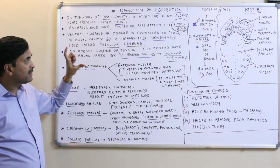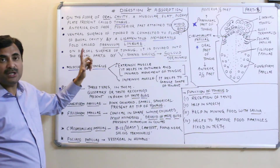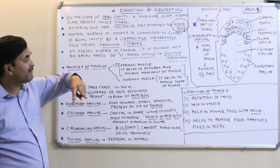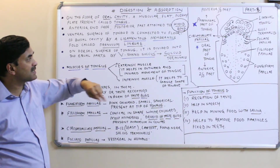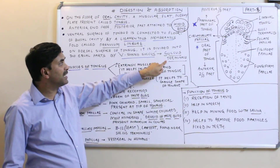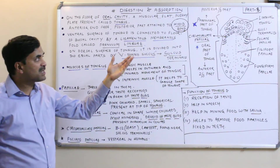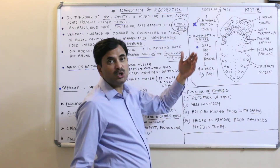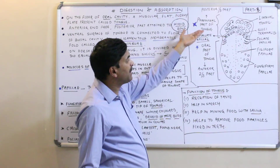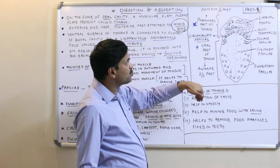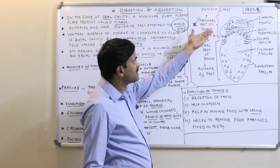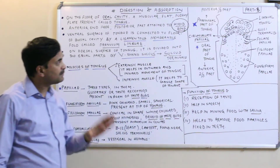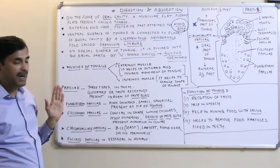The tongue is divided into two parts by a V-shaped sulcus called the sulcus terminalis. Because of this, the tongue is divided into the posterior one-third part, called the pharyngeal part, and the anterior two-thirds part, called the oral part.